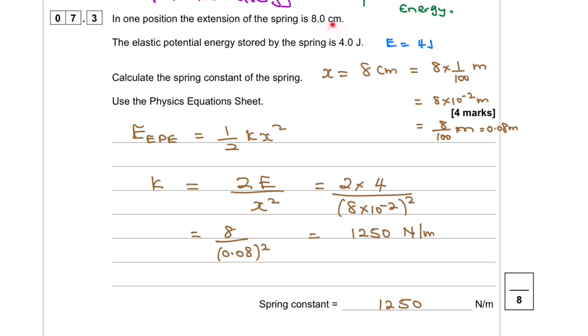We know 8 centimeters is 8 times 1 over 100 meters. Centimeter is 1 over 100, so that's 8 times 10 to the power minus 2 meters, or 8 over 100, which is 0.08 meters.